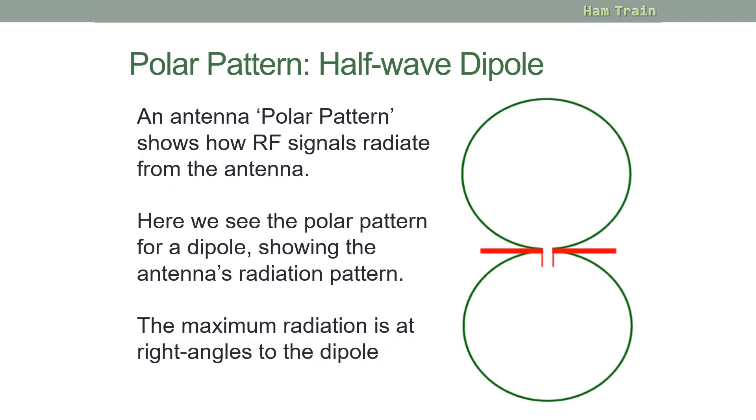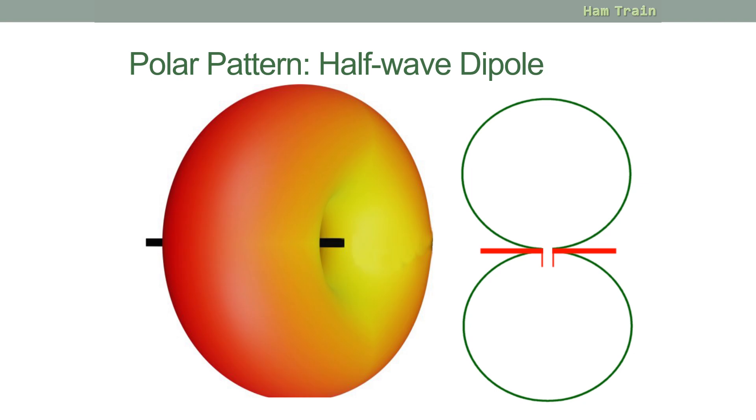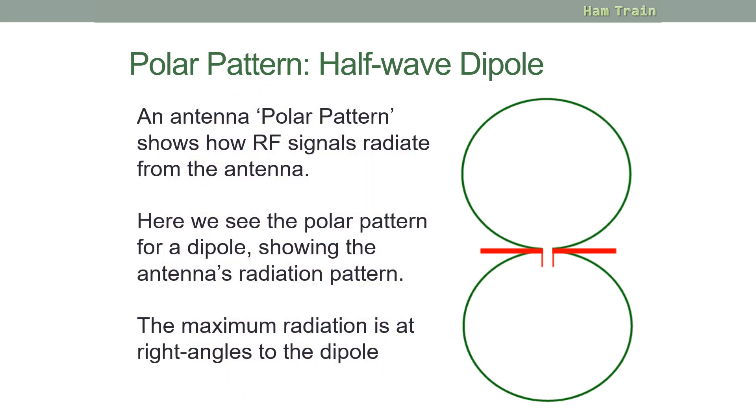Let's move on to something called the polar pattern. And here we're looking at a half wave dipole. In the red here on the screen you can see the two elements of our balanced dipole. In green there's a representation of what the signal is doing and how it's radiating out from our dipole. An antenna polar pattern shows how the radio signals radiate from the antenna. The maximum radiation you can see is at right angles to the active part of the dipole. We tend to use horizontally mounted dipoles for HF, with the aim being to get as much energy into the sky as we can.